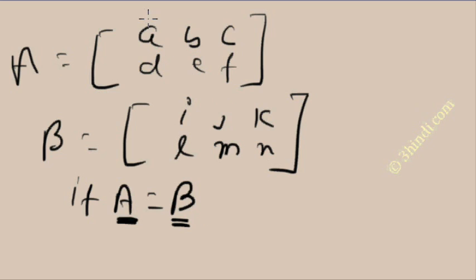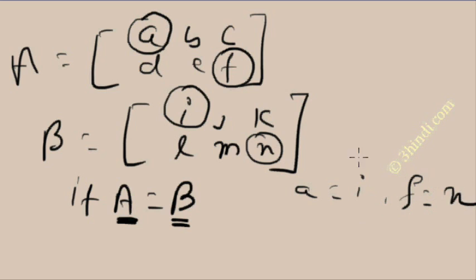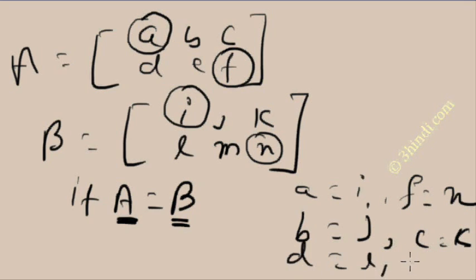What is the meaning of this? Take element A; the corresponding element of B is I. So A is equal to I. Take element F; the corresponding element in B is N. So F is equal to N. Similarly, B is equal to J, C is equal to K, D is equal to L, and E is equal to M. So if all corresponding elements are similar, then only A and B can be equal. Two matrices can be equal only when all corresponding elements are similar to each other.